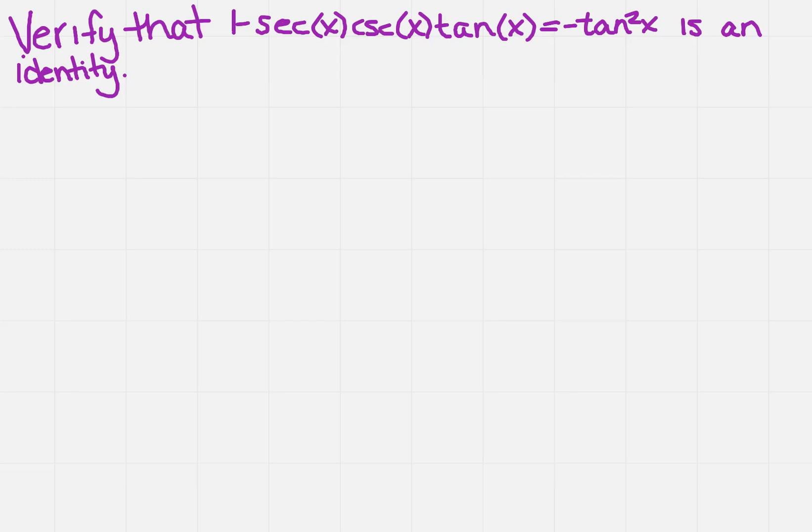So the very first thing you're going to want to do is rewrite the given. When you're doing that, make sure you think about other ways that you can write, in this case, the left-hand side of the equation. We're going to be using all of our trigonometric identities to help us prove that this really is an identity.